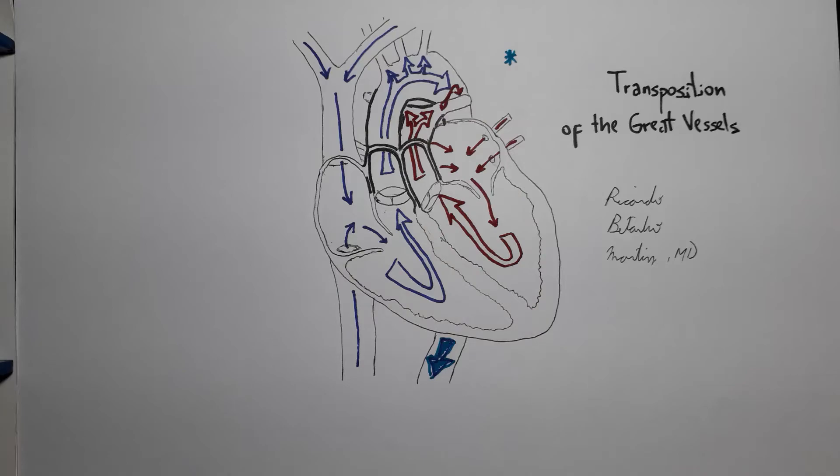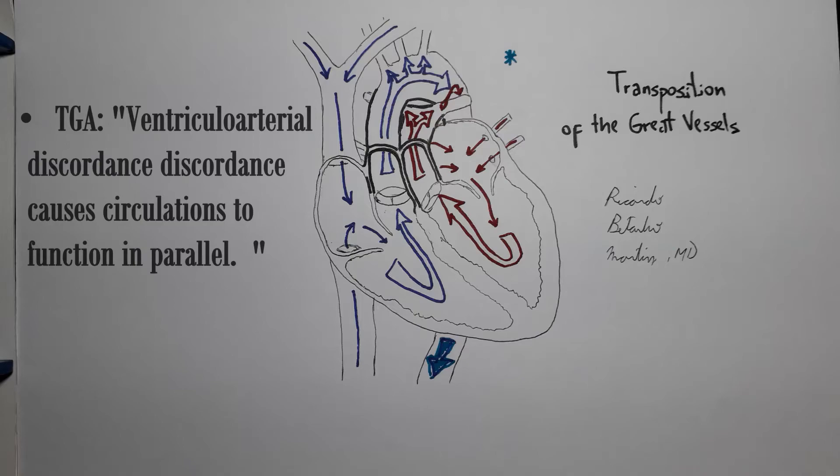In more technical terms, we could say that the ventricular arterial discordance—the aorta and the pulmonary trunk are arising from the wrong ventricles—causes the pulmonary and systemic circulations to function in parallel rather than in series.